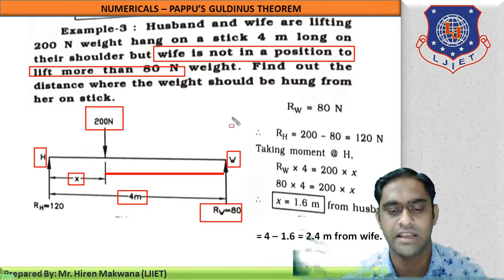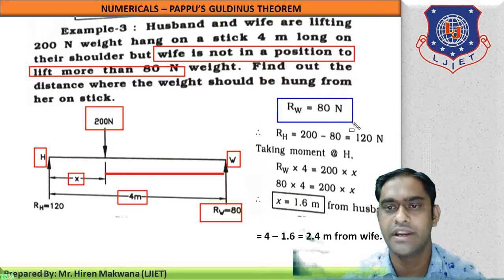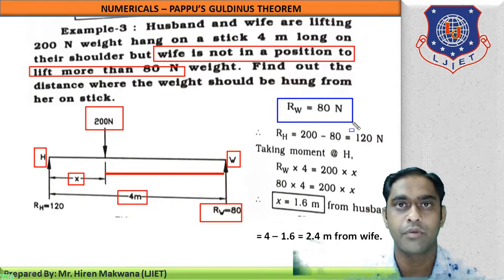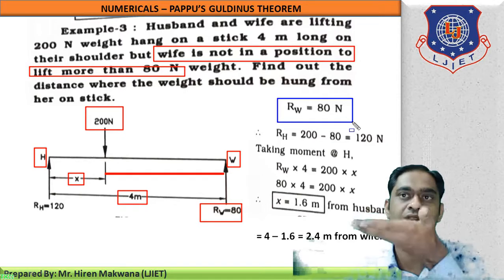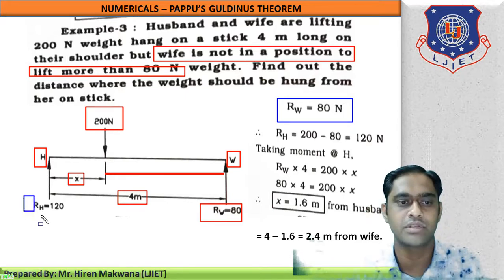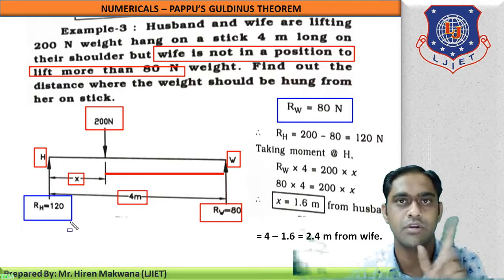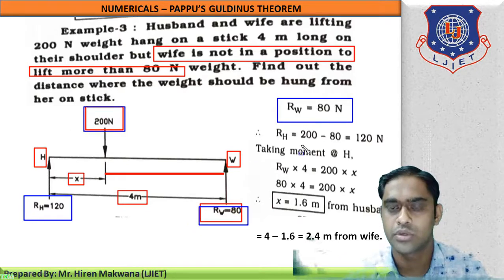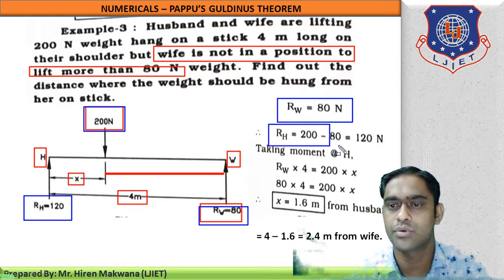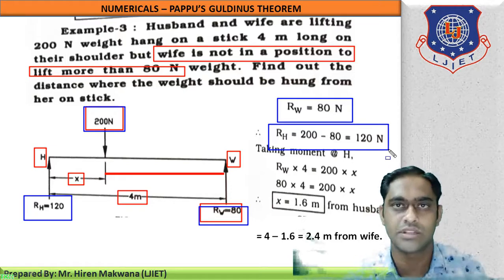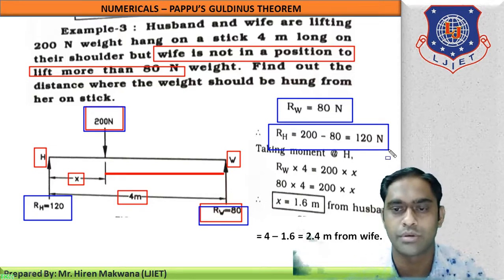The reaction of the wife, RW, is given as 80 N. Performing step number four: total upward forces equal downward forces. Upward forces are RH (husband's reaction) plus RW = 200 N downward. Therefore RH = 200 − 80 = 120 N.